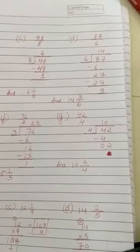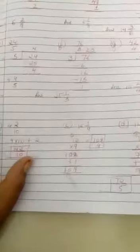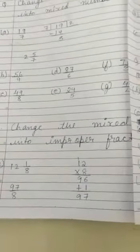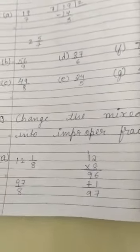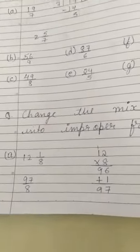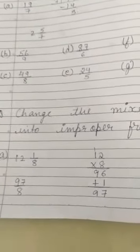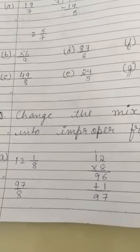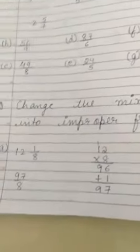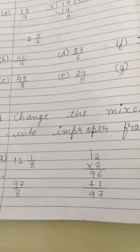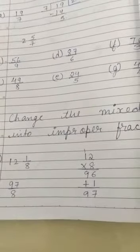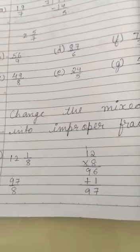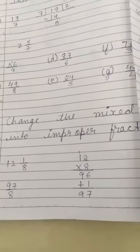Now moving on to our next question, which was change the mixed number into improper fraction. This was the first question which I gave you the solution: 12 1/8. What we have to do is multiply the quotient, that is 12, into 8, and plus add 1. This is how we do to change mixed fraction into improper fraction. So I left 6 questions, I am providing you the solution.